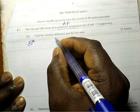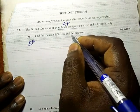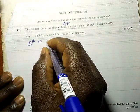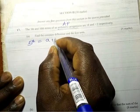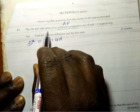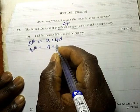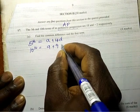We know the AP is a, the first term is a, a plus d, a plus 2d, like that. So the fifth term is going to be a plus 4d, that is the fifth term, and the tenth will be a plus 9d.